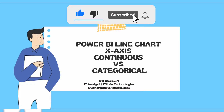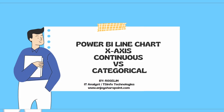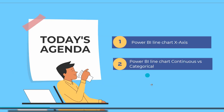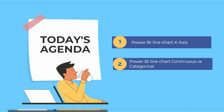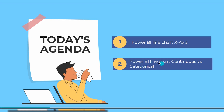Hello everyone, welcome to this YouTube channel. I'm Roslyn, and in this video we will learn about the Power BI line chart x-axis continuous type and categorical type. In the previous video we discussed how to work with the trend line and the reference line in the Power BI line chart. In this video we will discuss two different x-axis types: the continuous type and the categorical type.